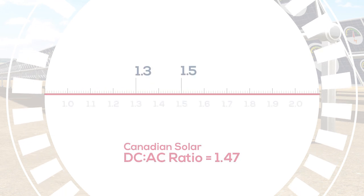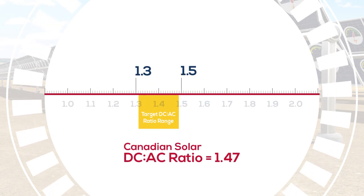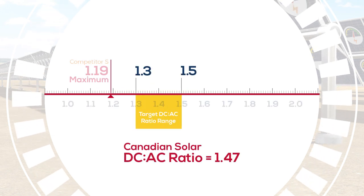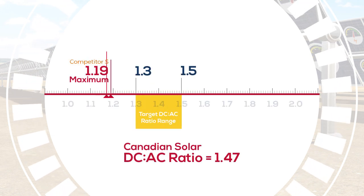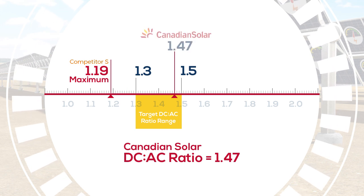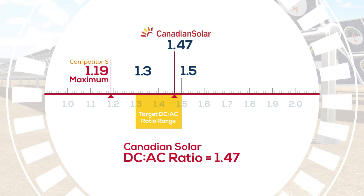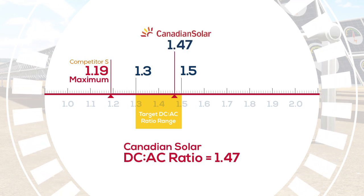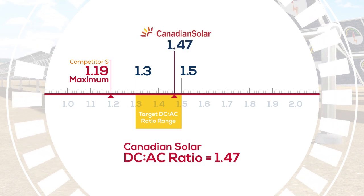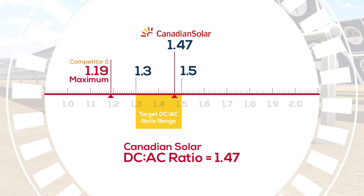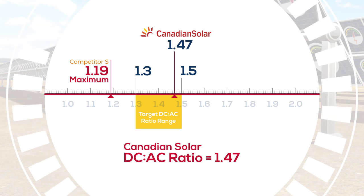In summary, Canadian Solar's 125-kilowatt inverter is better designed for bifacial systems, with a higher DC short circuit current rating enabling higher DC to AC ratios to produce more energy.